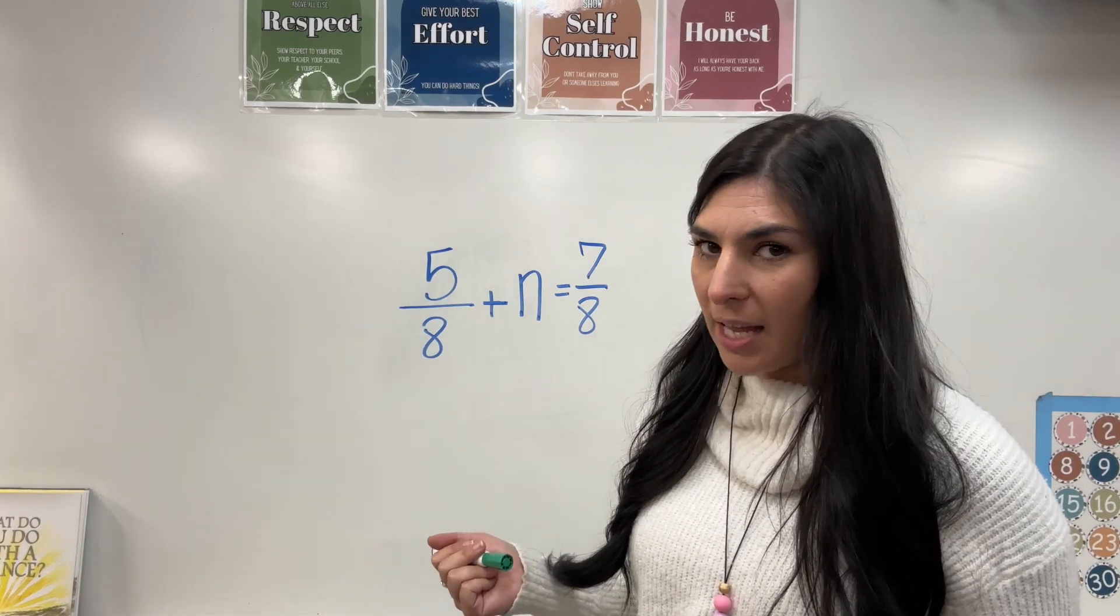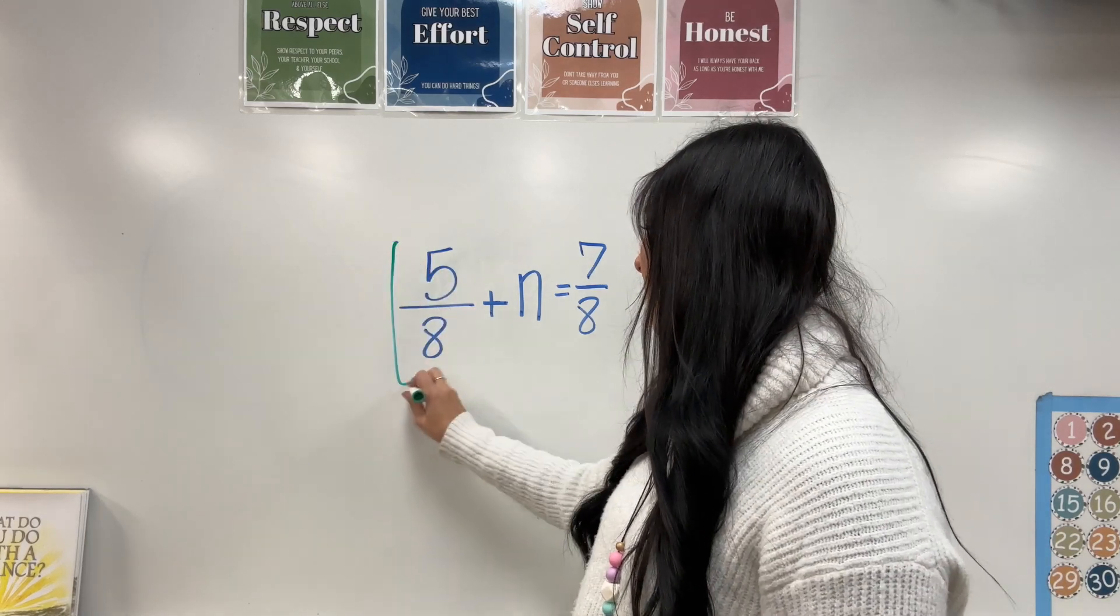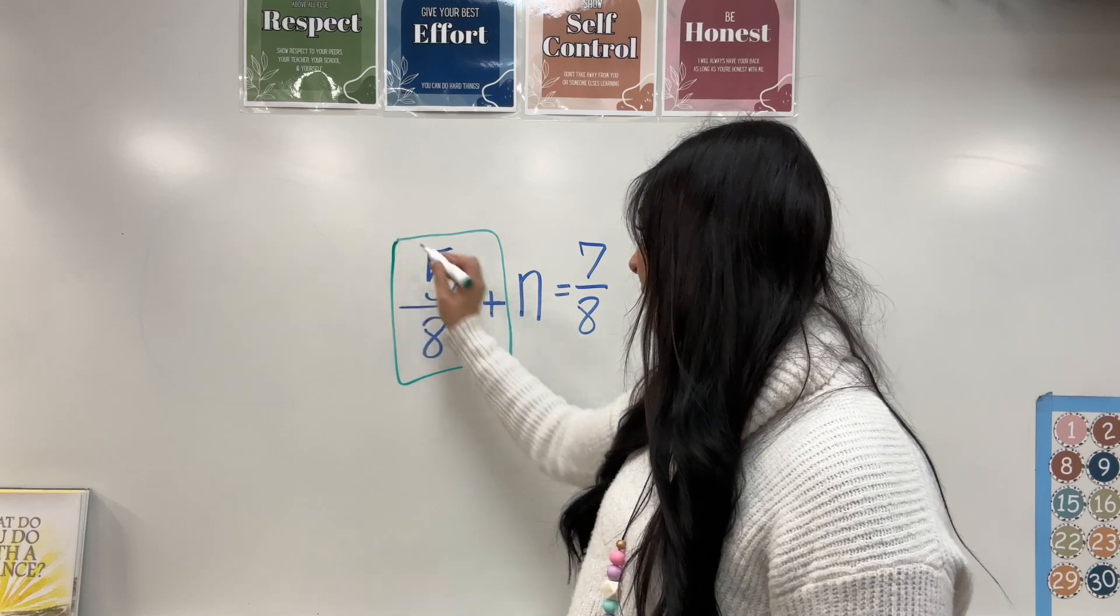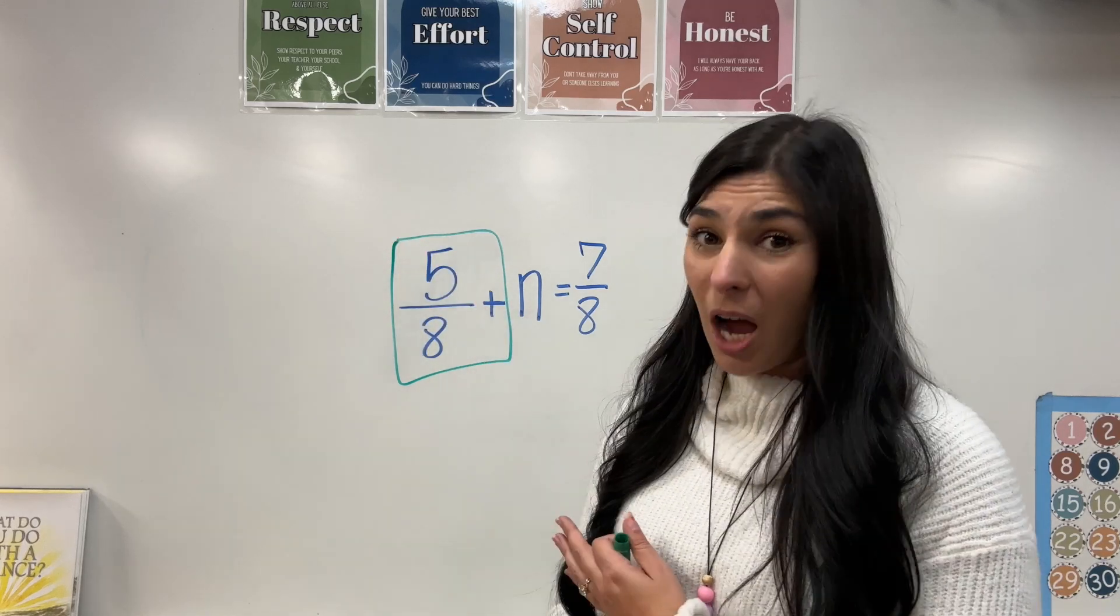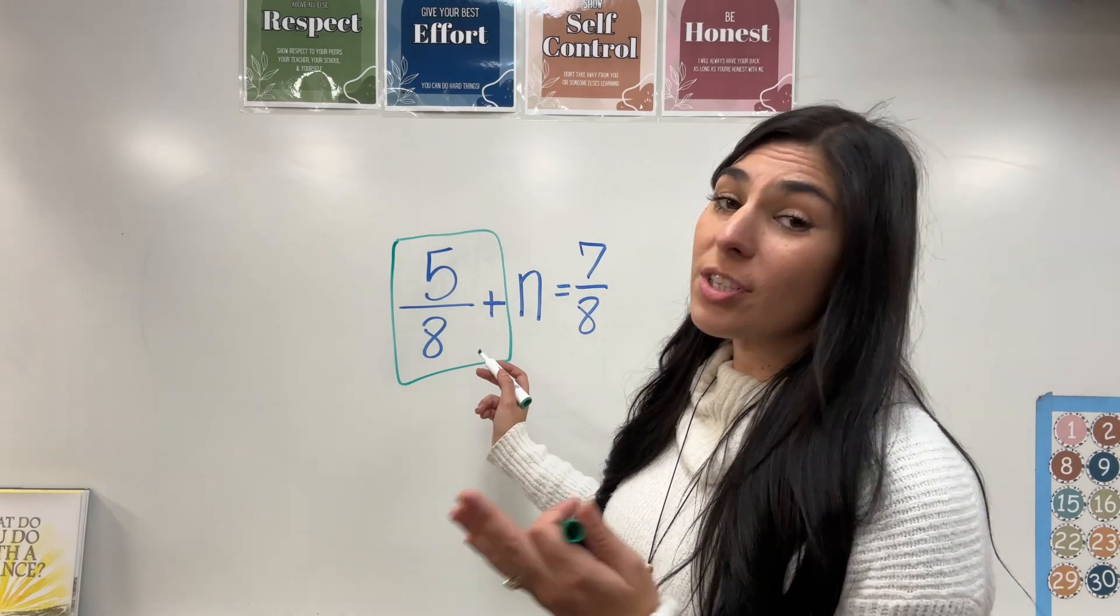Addition. So I know that these go together, plus five eighths. Now I want to get rid of that to get the n by itself. So I need the inverse operation, which is subtraction.